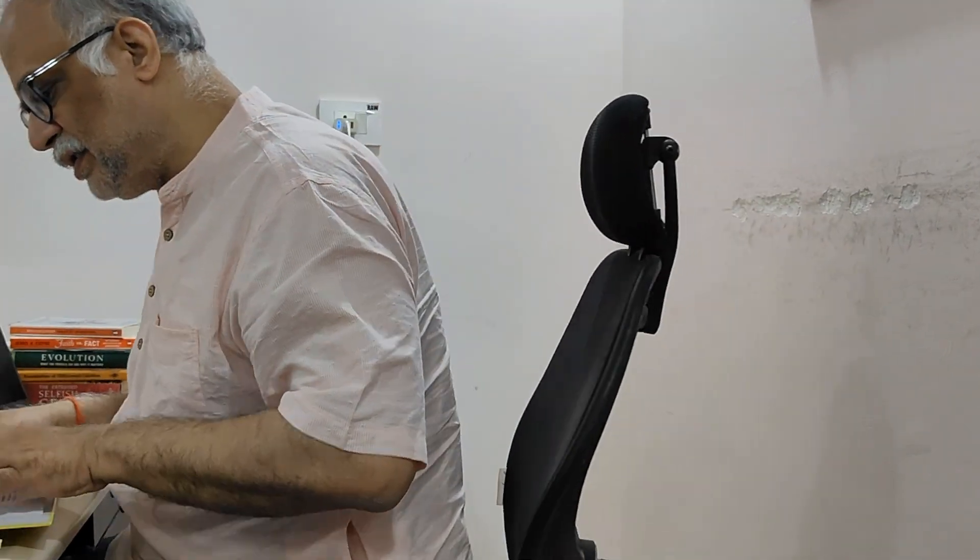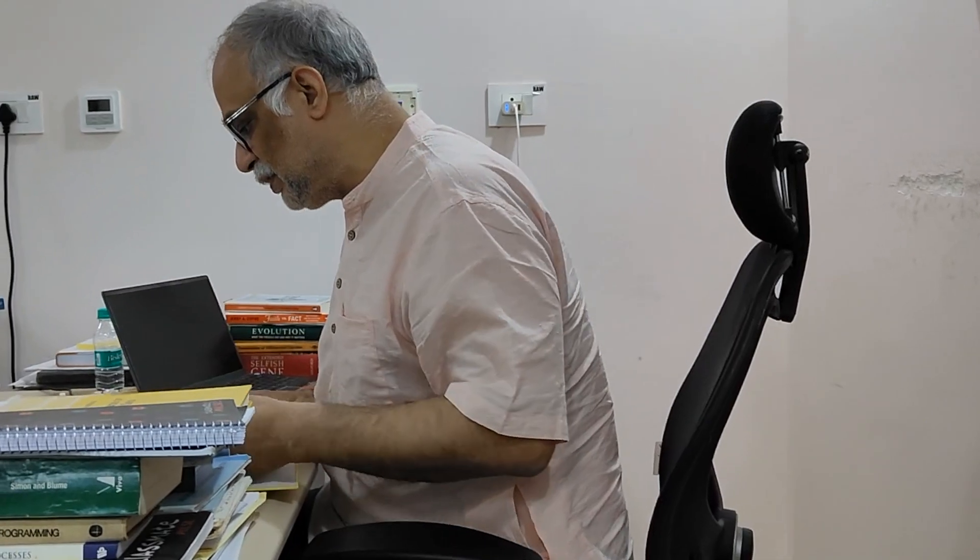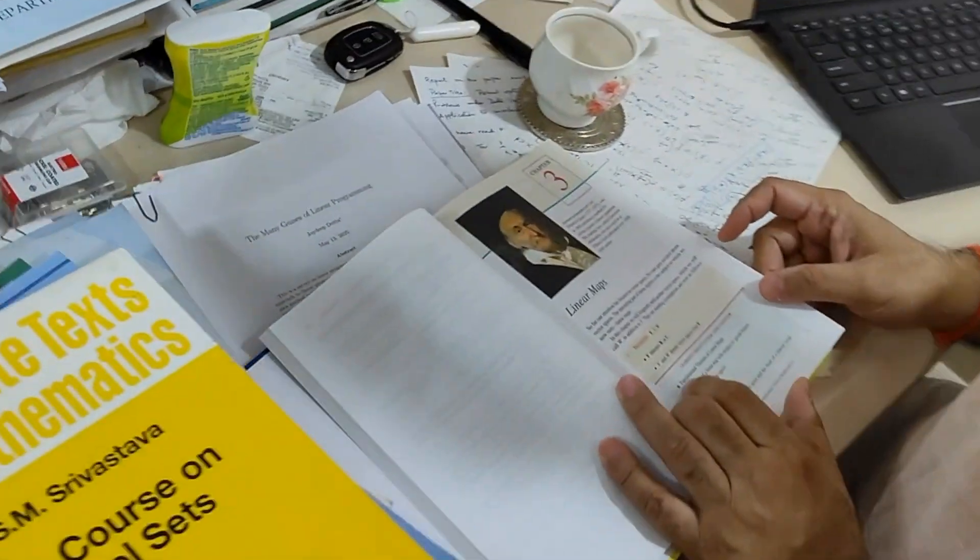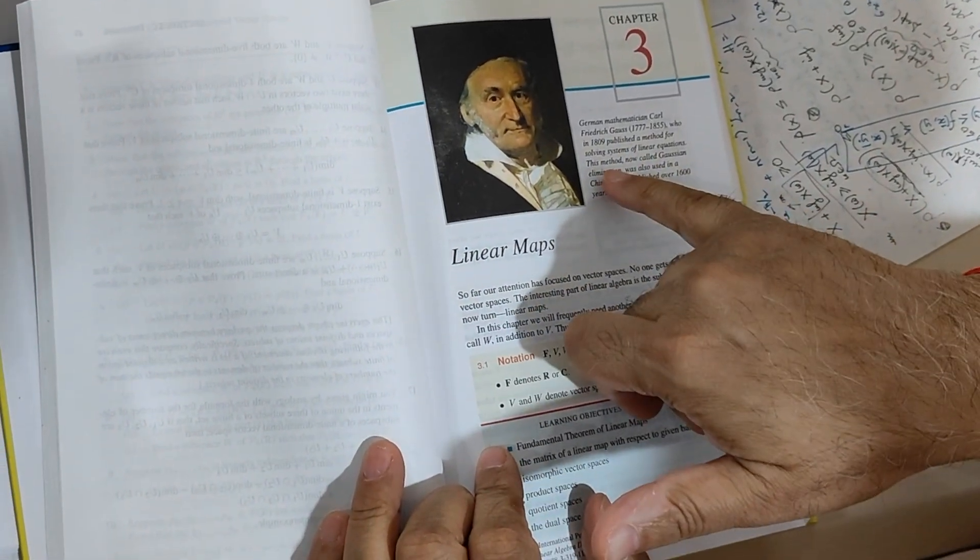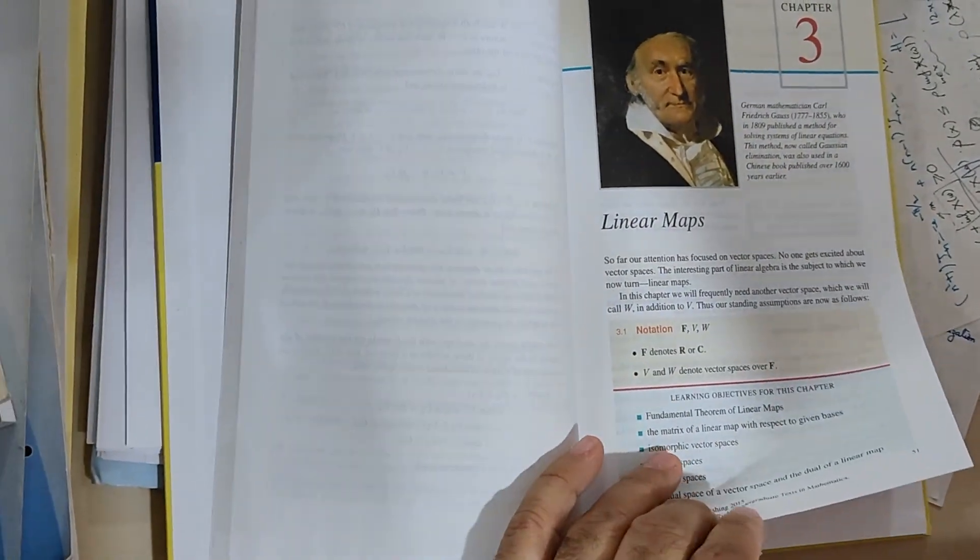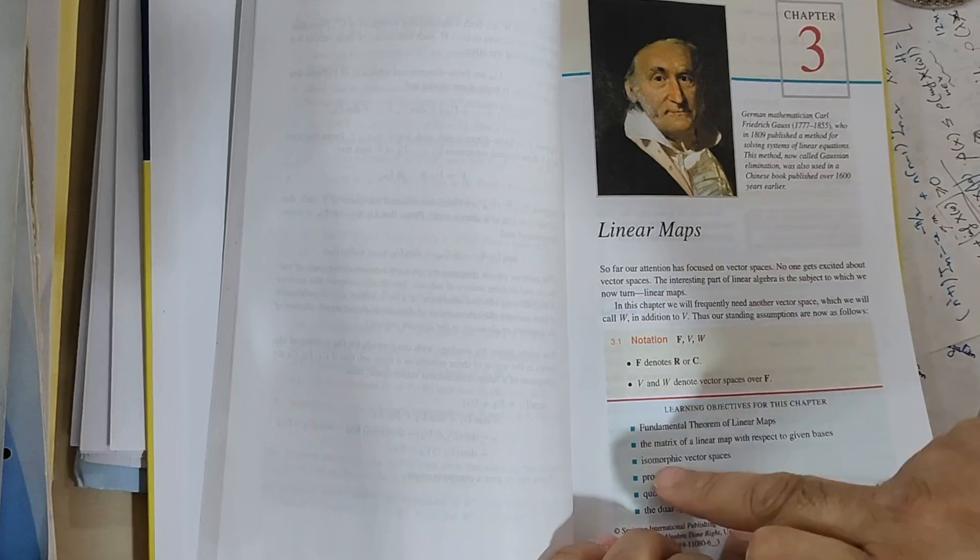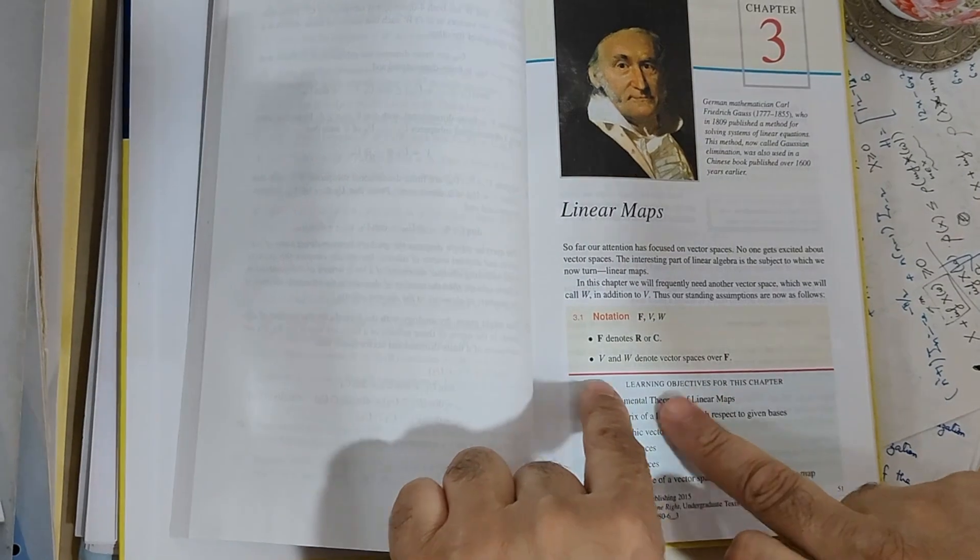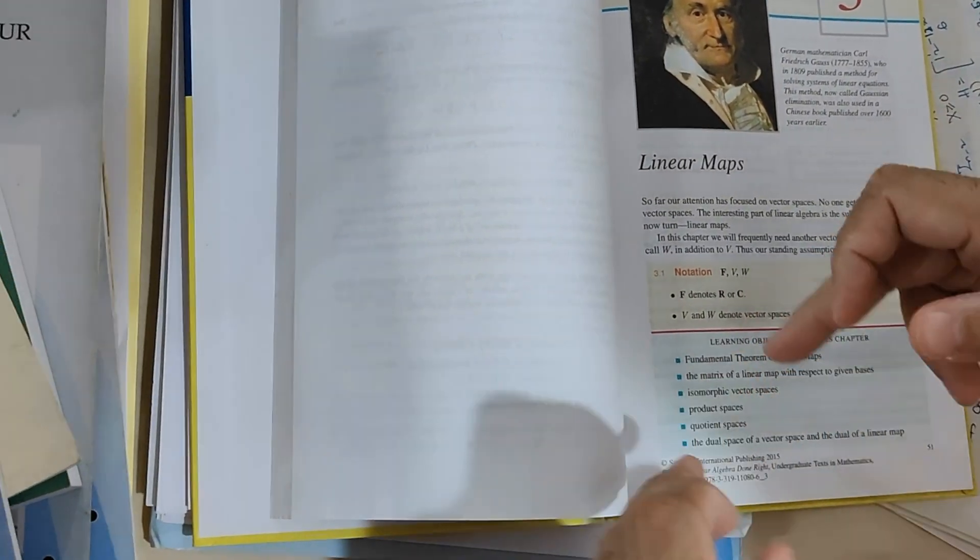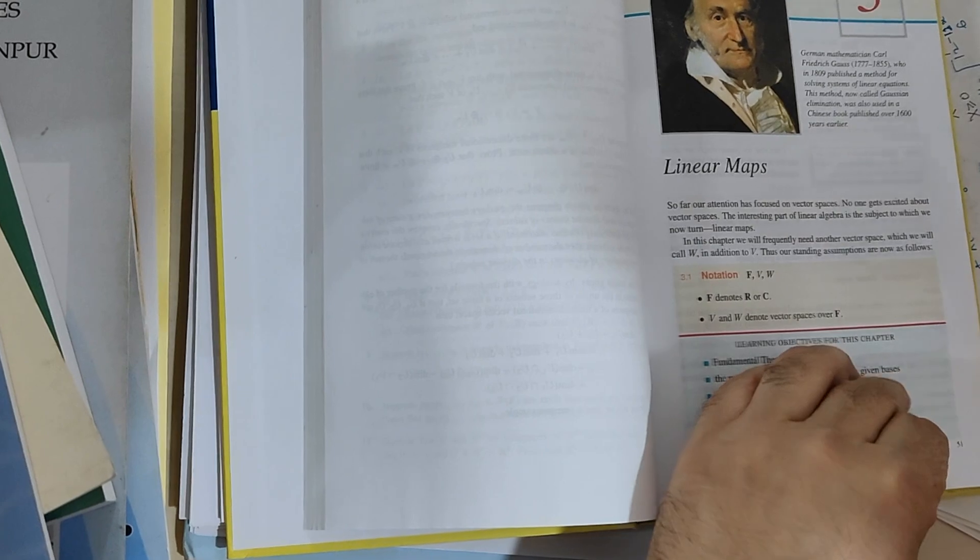And today our topic is of linear operators. So this is chapter 3, which I am going to show you. So here is a picture of Carl-Friedrich Gauss, who started the method of Gaussian elimination of solving simultaneous linear equations. So here we start with the linear maps and here are the fundamental learning objectives of this chapter. So it consists of a lot of things. Some of the important things are product spaces and quotient spaces, which we will discuss a bit.